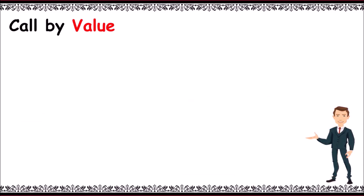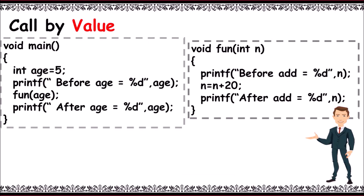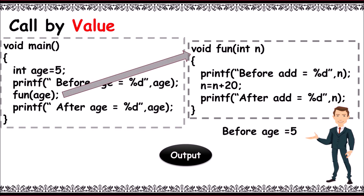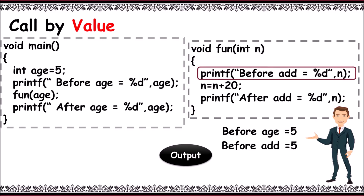Let's take an example for call by value. This program contains two functions: main and fun. In main, age is initialized to 5, it prints 'before age = 5', and then calls function fun, passing the value of age, that is 5, to fun. Control goes to void fun with n value as 5. It prints 'before add = 5' as n equals 5. Next, let's add 20 to n — n is 25 now.